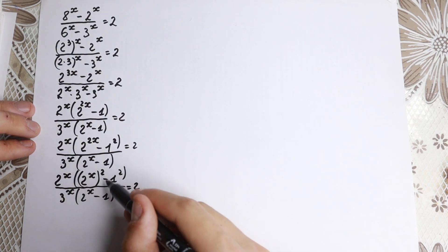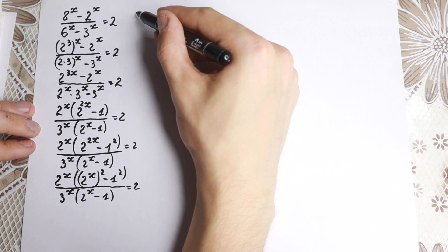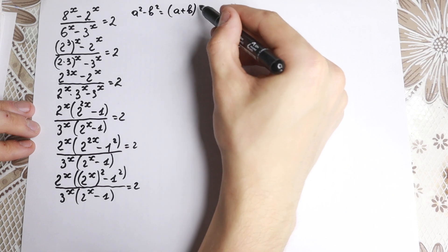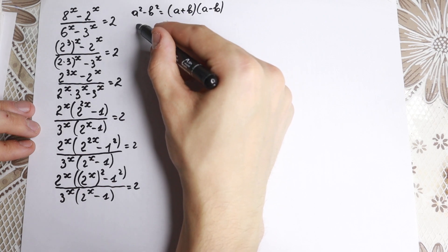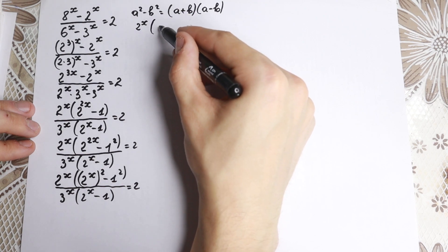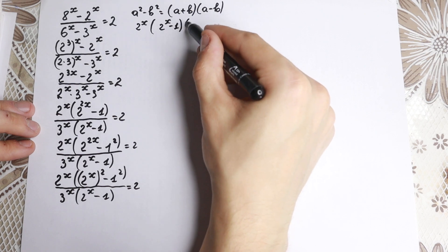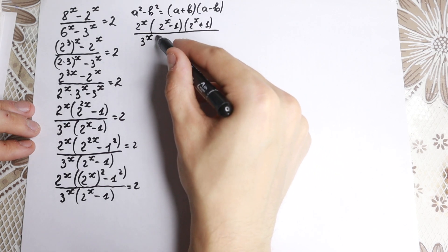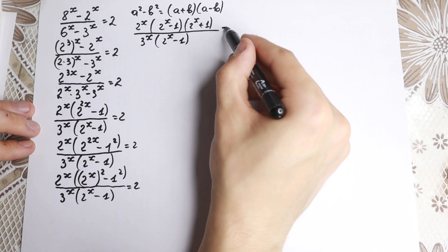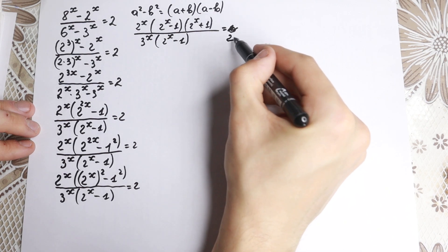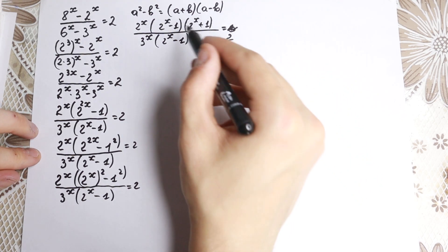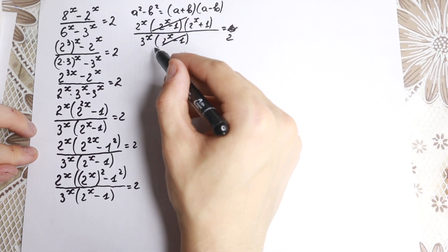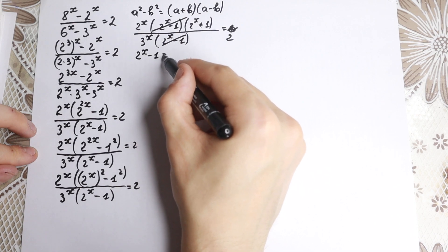This is the difference of squares identity: a squared minus b squared equals (a plus b)(a minus b). Applying this, we get 2 to the x times (2 to the x minus 1)(2 to the x plus 1), all over 3 to the x times (2 to the x minus 1), equal to 2. Now (2 to the x minus 1) appears in both numerator and denominator, so we can cancel it.